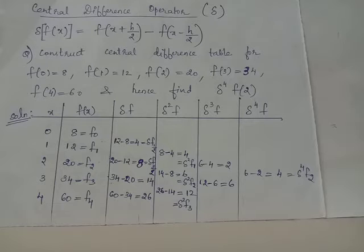Construct a central difference table for the values f of 0 equals 8, f of 1 equals 12, f of 2 equals 20, f of 3 equals 34, and f of 4 equals 60.